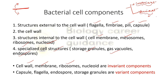We divide cells into two components — invariant components and variant components. Invariant components are present in any bacteria and are required for survival. These are nucleoid, cell wall, cell membrane, and ribosomes. Variant components are not present in every bacteria — these include capsule, plasmid, endospores, and storage granules. Invariant components are required for the survival of the organism.